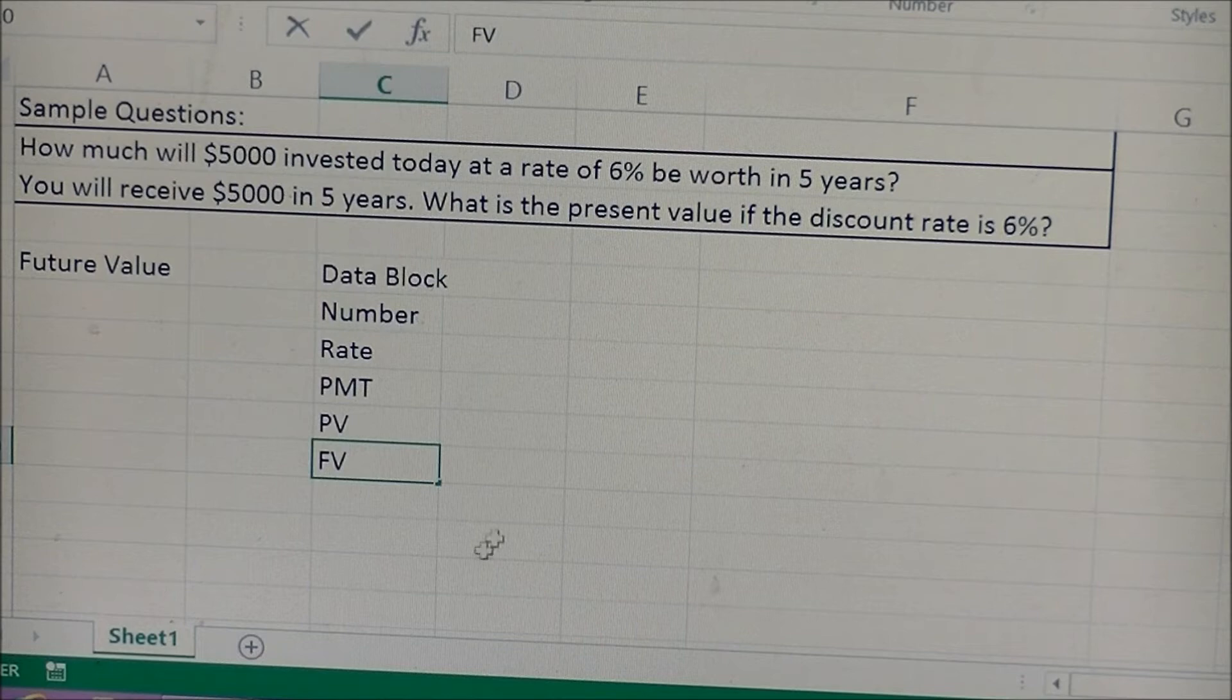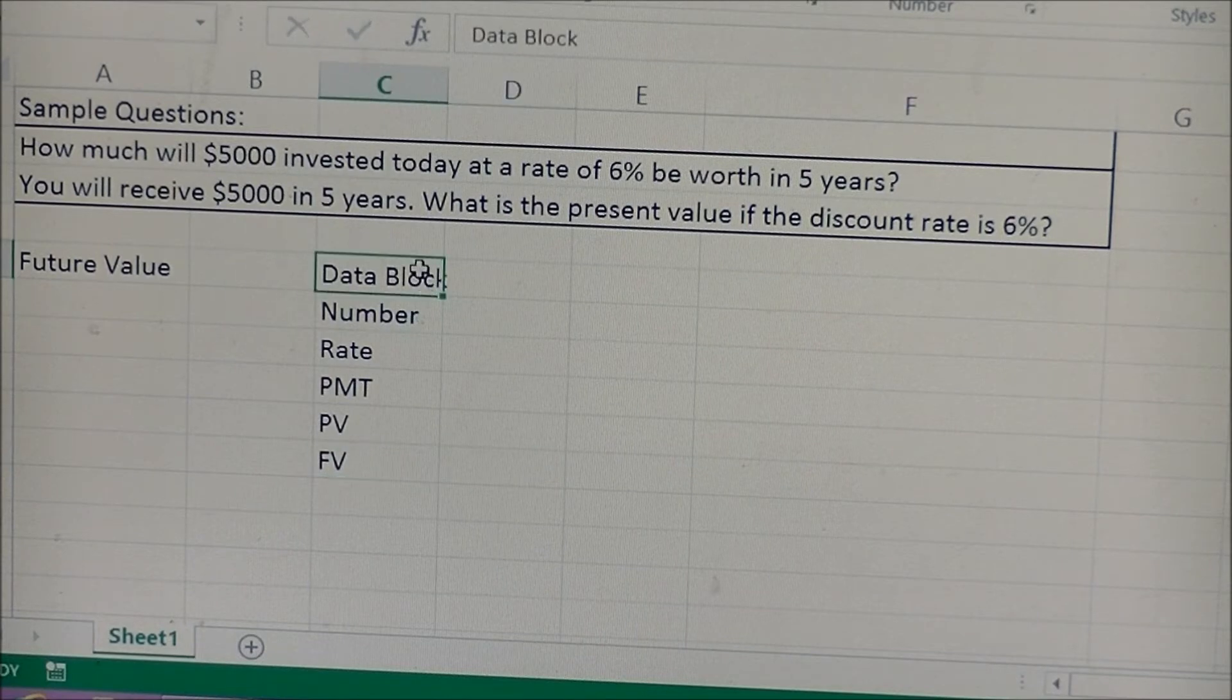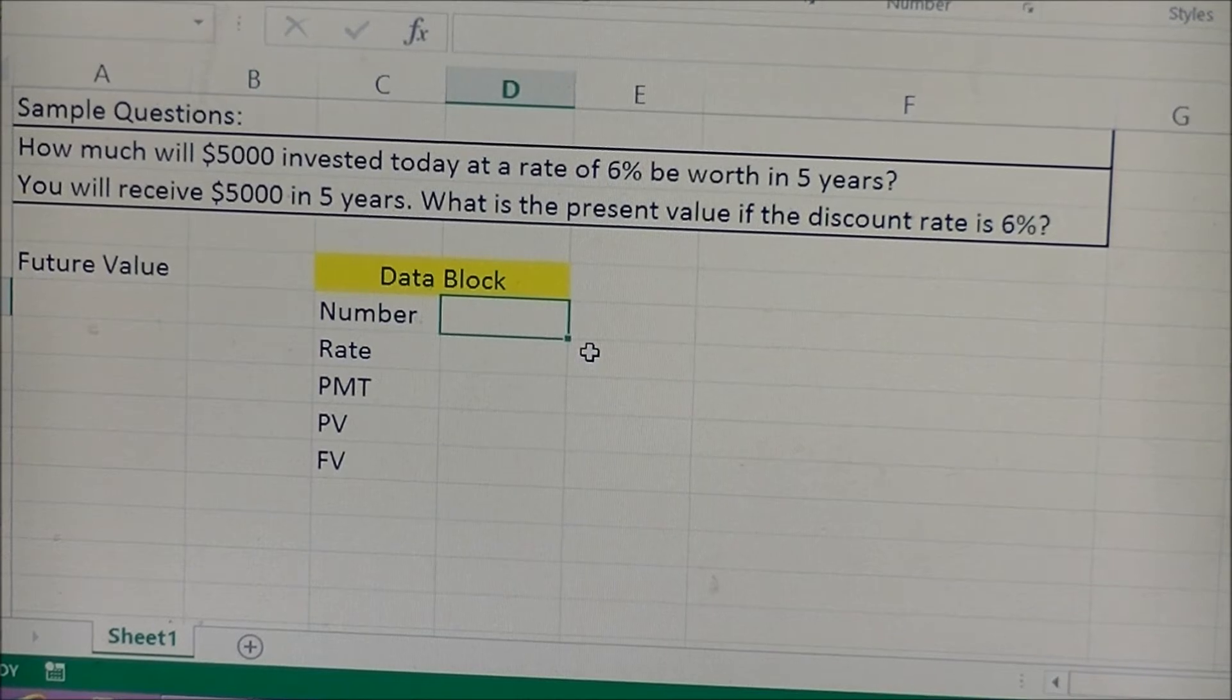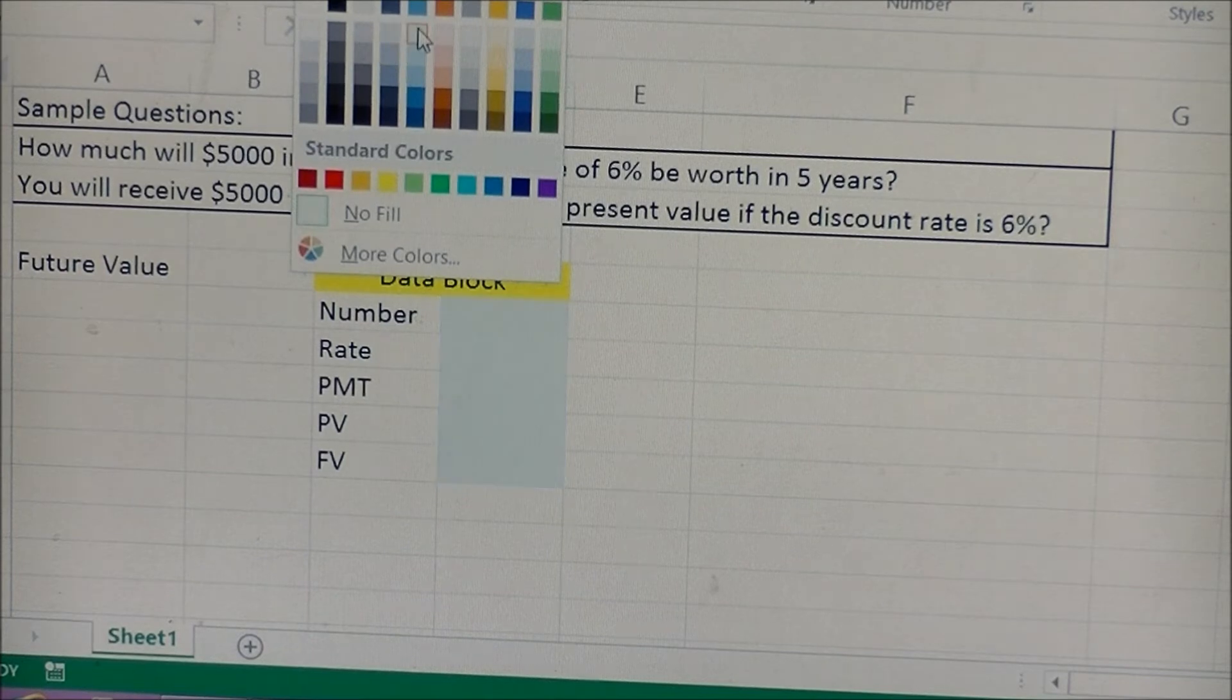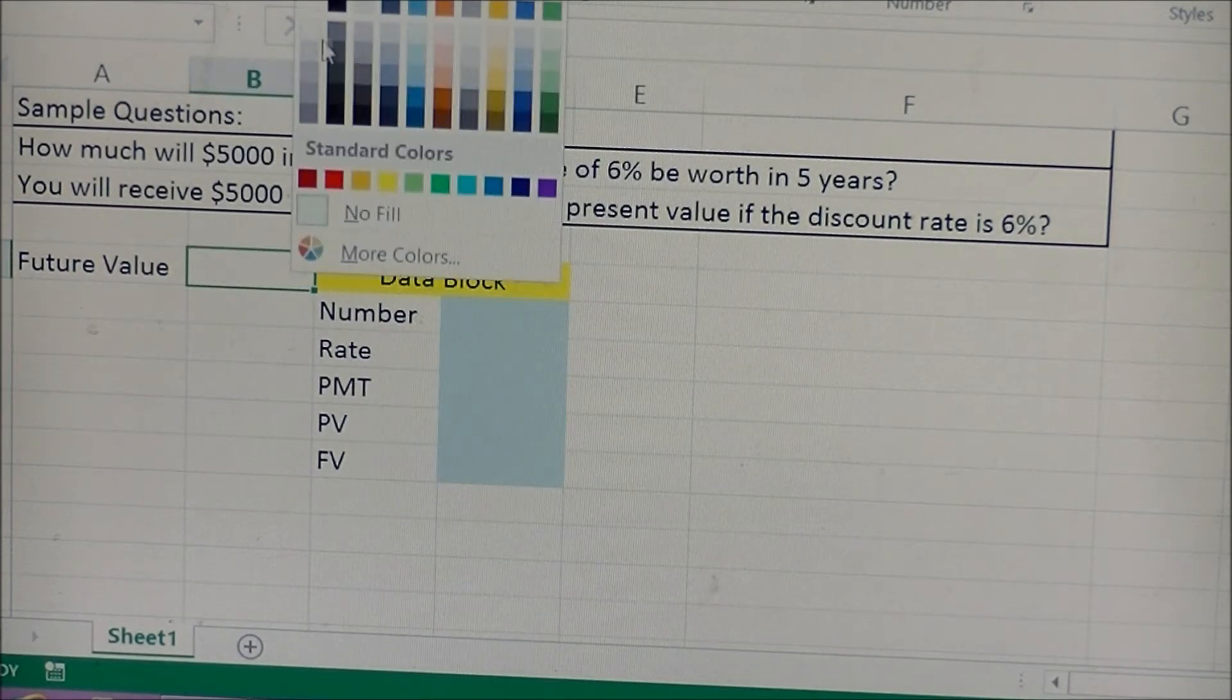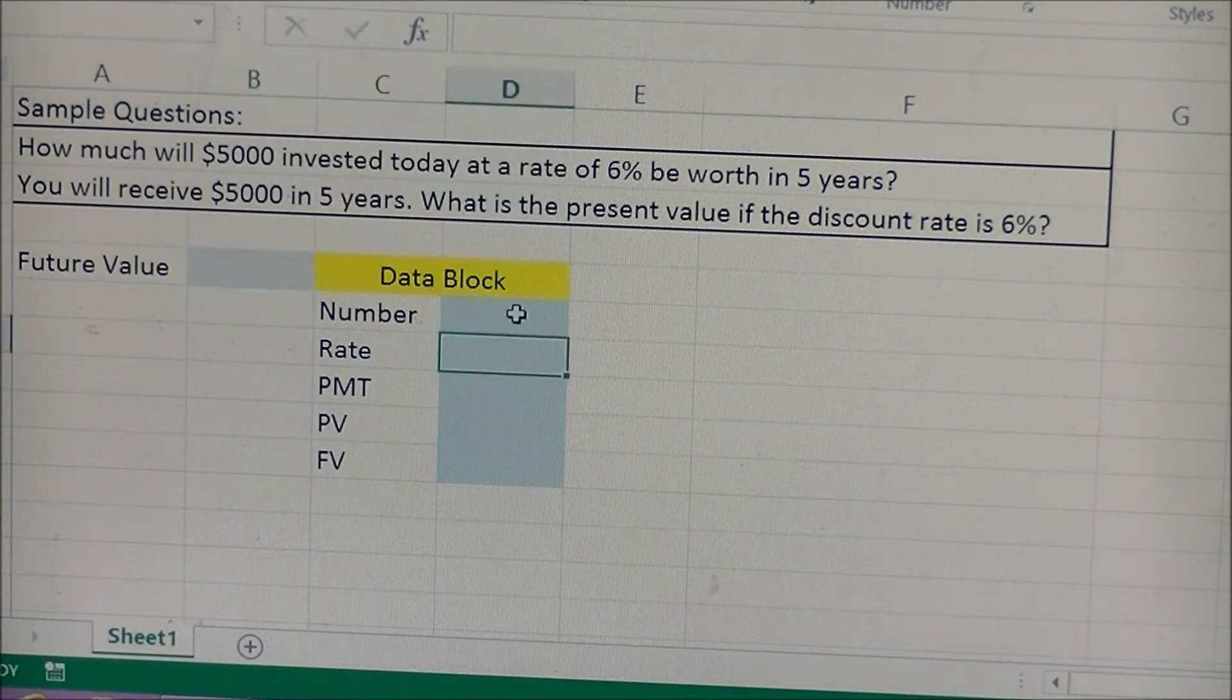So for this, I always like to merge the cells and then color-code it with the data block. And next thing we're going to do is we're going to start plugging in our variables. For the variables, I'll always put this in blue, and then the answers will always be gray. Color-coding makes it easy for you to differentiate what you changed and what you leave alone.